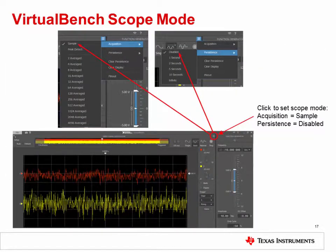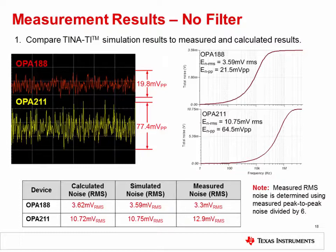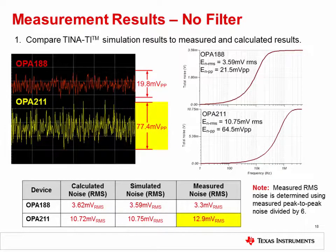You must also set the mode of the VirtualBench oscilloscope: click the button shown on the front panel, then set acquisition to sample and persistence to disabled. The expected output voltage noise results from the measurement are shown in the screenshot. The OPA188 has a measured noise of 19.8 millivolts peak to peak or 3.3 millivolts RMS, and the OPA211 has a measured noise of 77.4 millivolts peak to peak or 12.9 millivolts RMS. As you can see from the table, this agrees extremely well with the results from calculation and simulation.